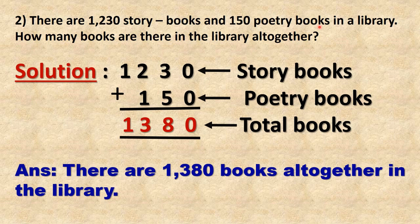What we are supposed to find out: total number of books. Method: addition. Solution — statement: 1,230 story books plus 150 poetry books. Now we will add these numbers. 0 plus 0 is 0, 3 plus 5 is 8, 2 plus 1 is 3, 1 plus 0 is 1. The final answer is there are 1,380 books altogether in the library.